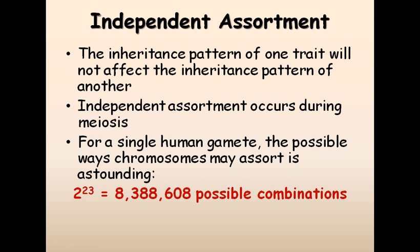The inheritance pattern of these two traits will not influence one another. They will be transmitted independently and assort independently during gamete formation. Independent assortment occurs during meiosis, because gametes are formed during meiosis. So during gamete formation, none of those characteristics will influence the others.